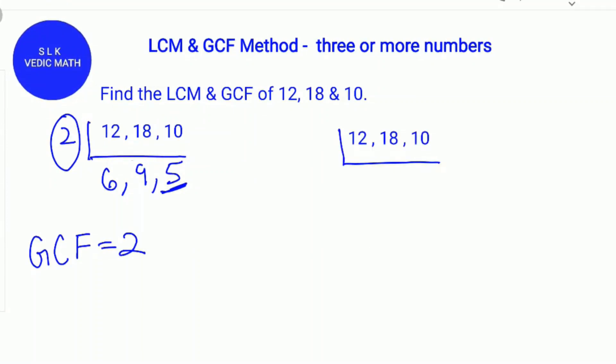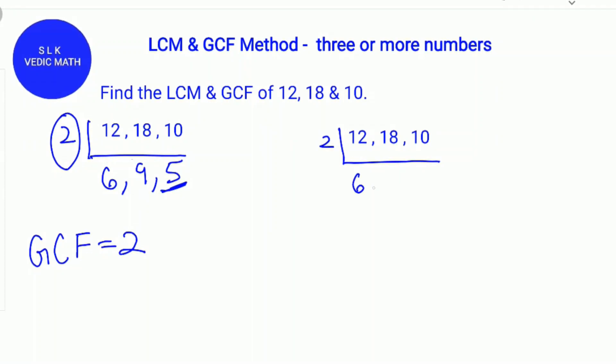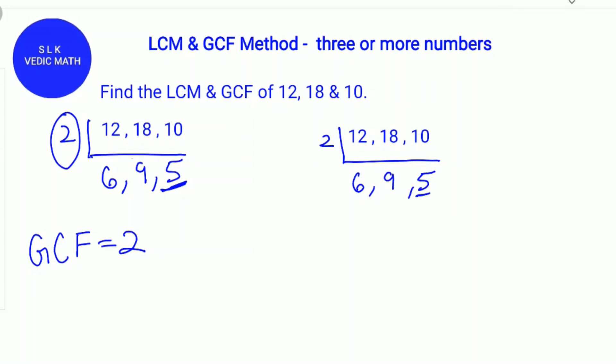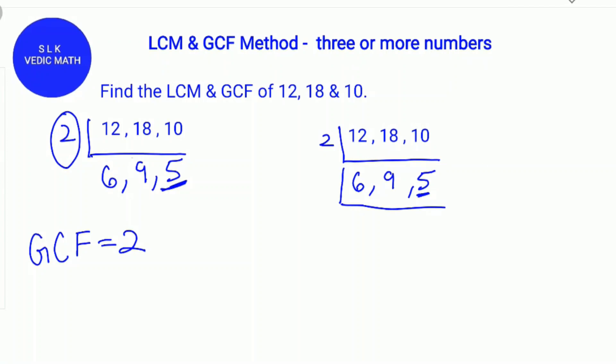To find the LCM, we rewrite this part. Since 5 is a prime number, we write it as it is in the next line.